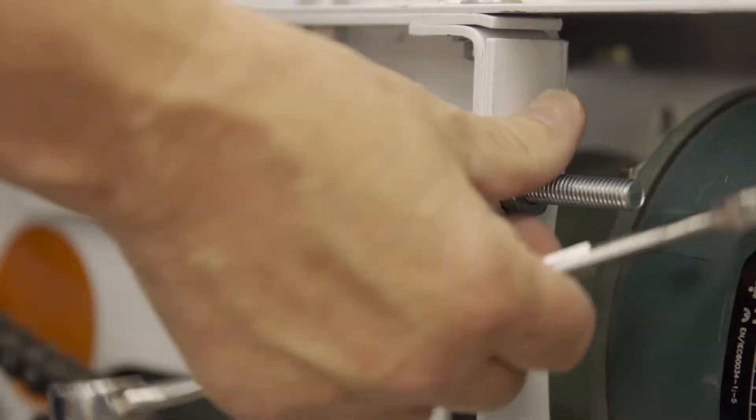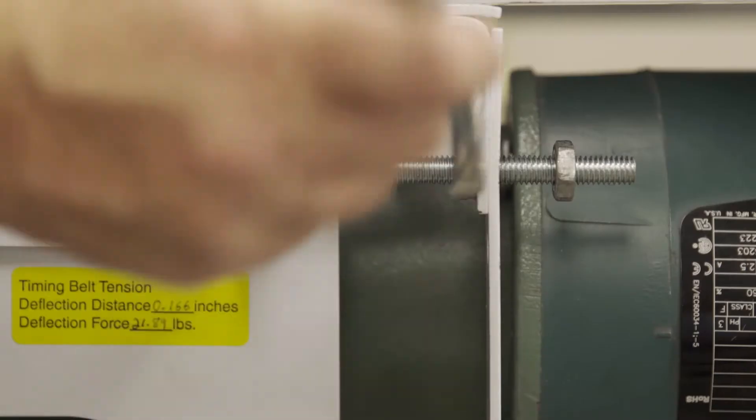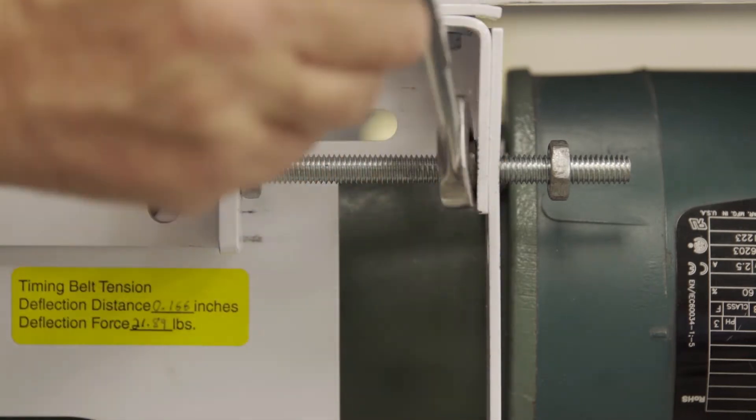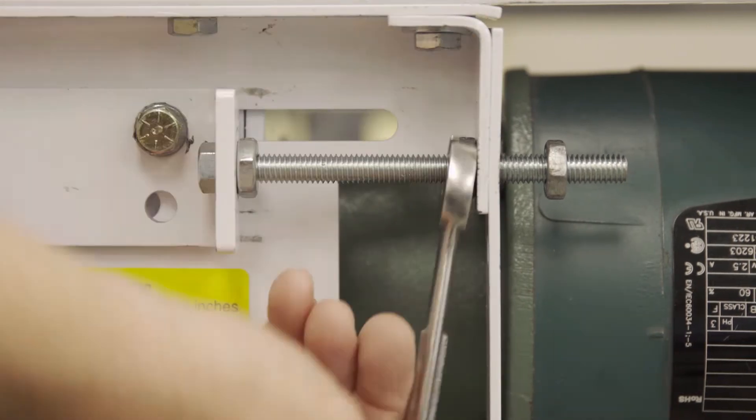Loosen the two 3 eighths jam nuts on the drive take-up bolts, one on each side of the drive. Now you should be able to move the motor base plate. Slide the motor base plate all the way to the back of the adjustment slots toward the drive pulley.